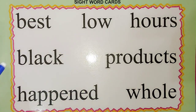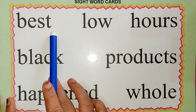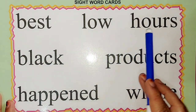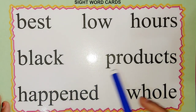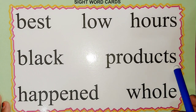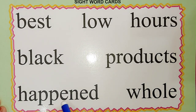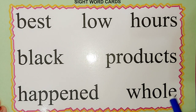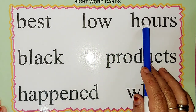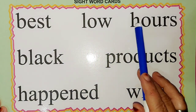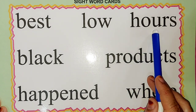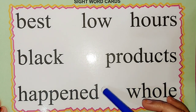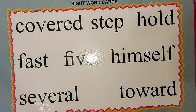The next word is B-E-S-T: best. L-O-W: low. H-O-U-R-S: hours — H is silent here, so we pronounce it as 'hours'. B-L-A-C-K: black. P-R-O-D-U-C-T-S: products. H-A-P-P-E-N-E-D: happened. W-H-O-L-E: whole. Once again: best, low, hours, black, products, happened, whole.